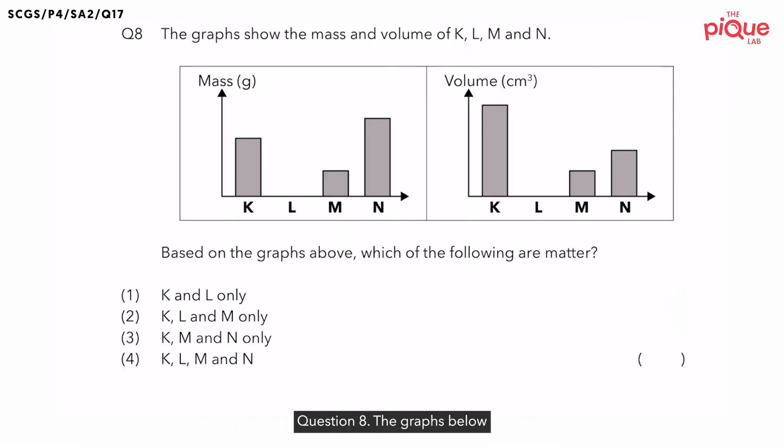Question 8. The graph below shows the mass and volume of K, L, M and N. So based on this statement, what properties are we looking at? We are going to look at the mass and the volume. Based on the graph given to us, the question wants us to identify which of the following are matter.